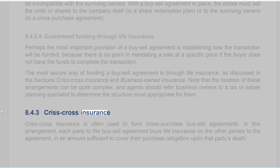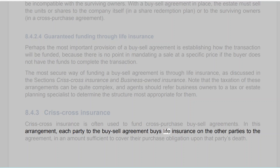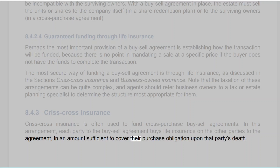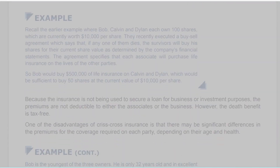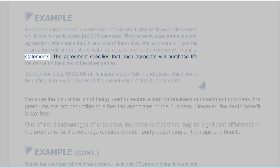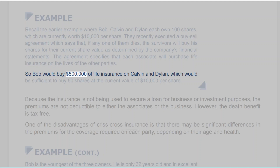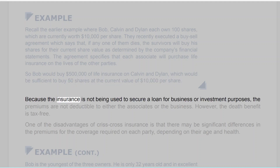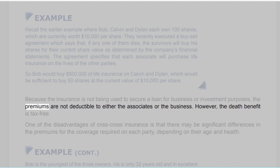8.4.3 Criss-Cross Insurance. Criss-Cross Insurance is often used to fund cross-purchase buy-sell agreements. In this arrangement, each party to the buy-sell agreement buys life insurance on the other parties in an amount sufficient to cover their purchase obligation upon that party's death. Recall the earlier example where Bob, Calvin and Dylan each own 100 shares worth $10,000 per share. They recently executed a buy-sell agreement specifying that each associate will purchase life insurance on the lives of the other parties. So Bob would buy $500,000 of life insurance on Calvin and Dylan, which would be sufficient to buy 50 shares at the current value of $10,000 per share. Because the insurance is not being used to secure a loan for business or investment purposes, the premiums are not deductible to either the associates or the business. However, the death benefit is tax-free.